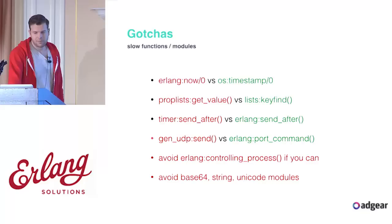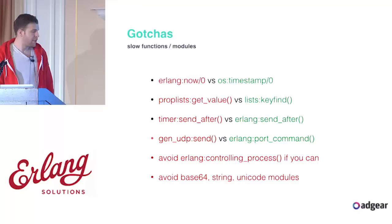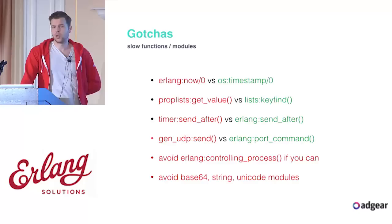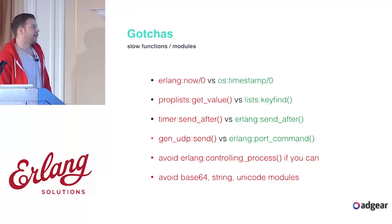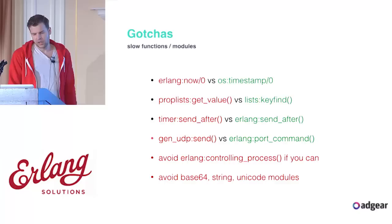Some gotchas — slow functions and modules you probably want to avoid. erlang:now has a lock: if you just need the time and don't need the uniqueness guarantee, use os:timestamp. There's also proplist:get_value written in Erlang versus lists:keyfind, which is a BIF and much faster.